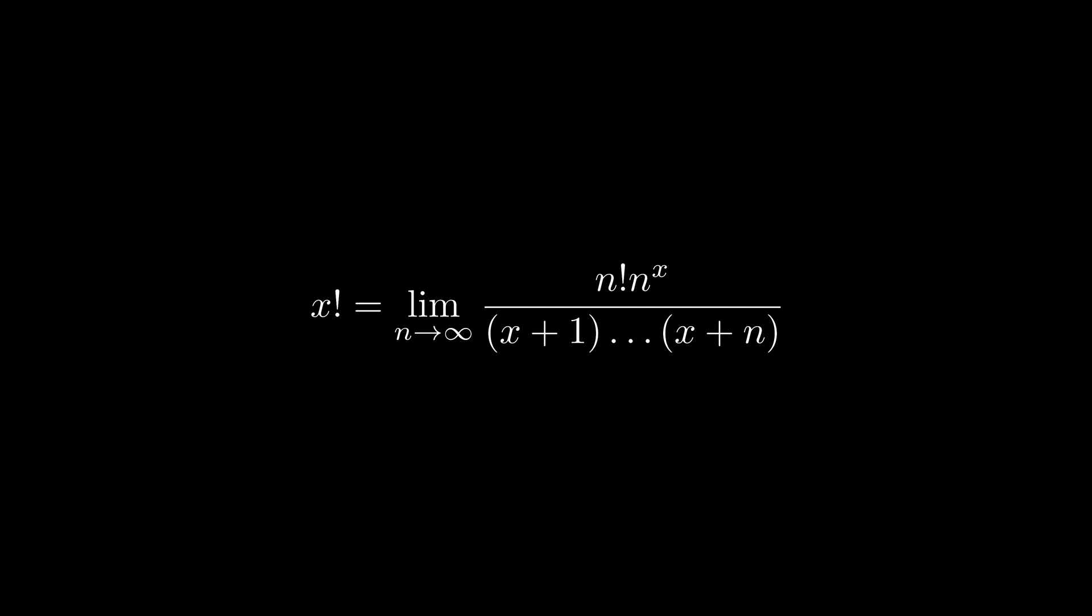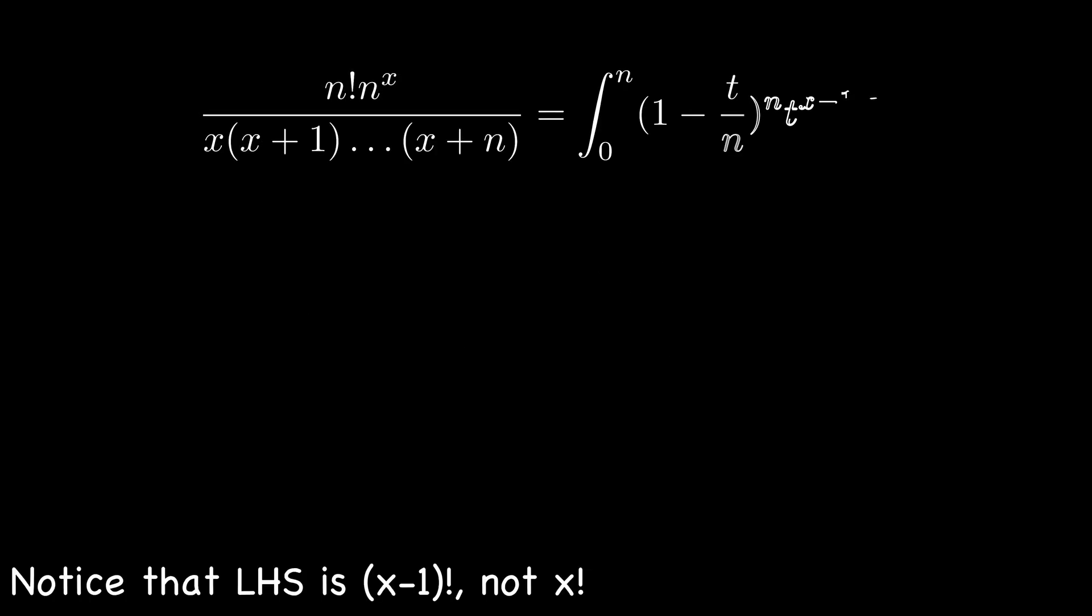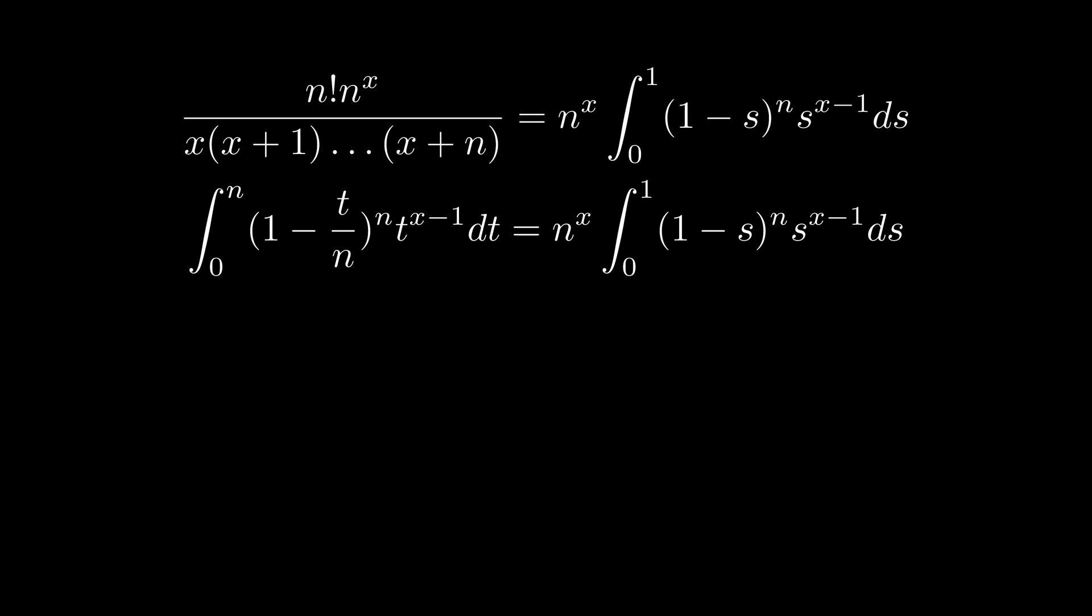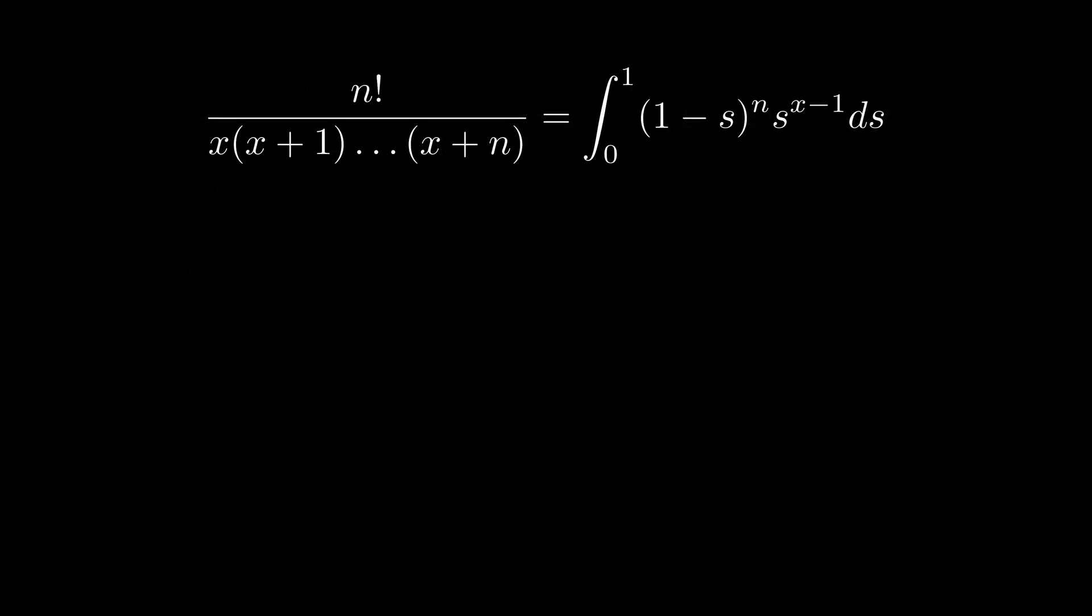Next we convert our product formula to an integral. This is our goal. For any n we prove that this equation holds true. Let's do a u substitution with s equals t over n. This way the integral upper bound becomes 1 and we can move n to the power of x out of the integral sign. With a little bit of manipulation we can cancel out this n to the power of x on both sides and we end up with this integration.